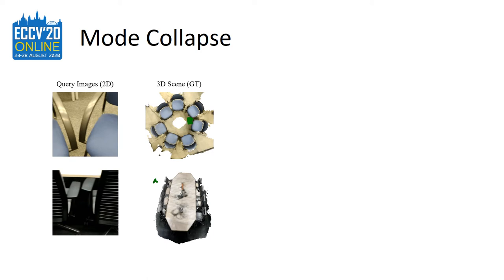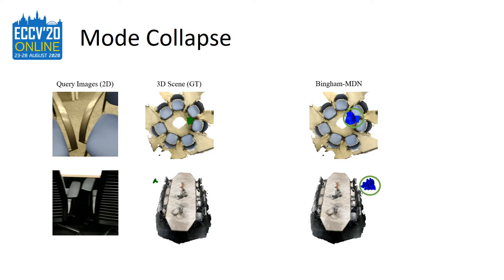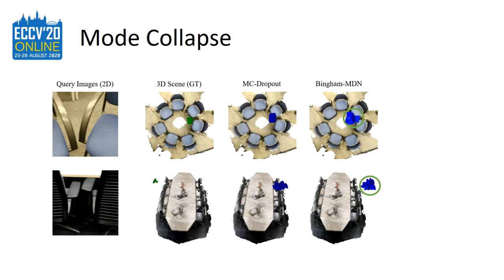However, training such a model has been shown to result in mode collapse, where all hypotheses cluster around a single mode. An alternative to our method would be to use dropout to sample pose hypotheses from a neural network. However, in addition to the computational overhead introduced by the iterative sampling procedure, we have experimentally found the mode collapse problem to arise in dropout-based methods as well.